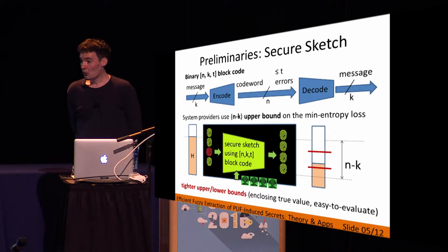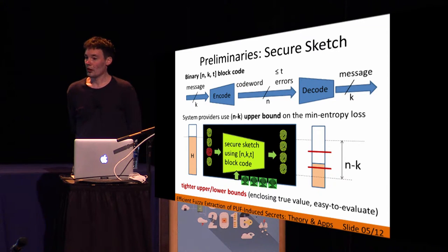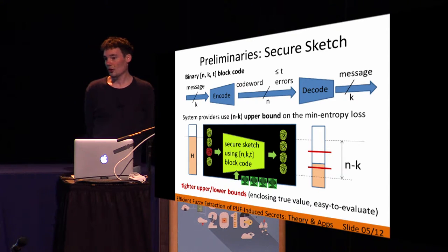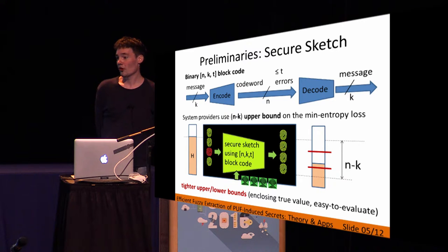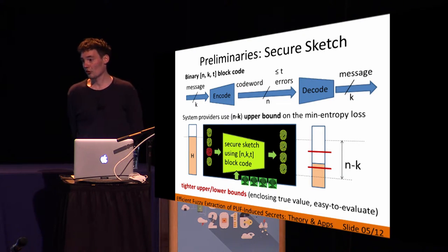However, this upper bound is in many cases overly conservative — we have more min-entropy left than the bound indicates, and this is an inefficiency. The goal of this work is to derive tighter lower and upper bounds on the min-entropy loss, indicated in red, to make the PUF-based key generator more efficient. Importantly, these bounds are easy to evaluate — it is just a matter of milliseconds to seconds on a conventional PC.